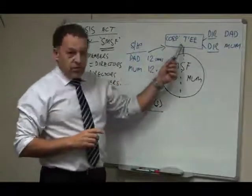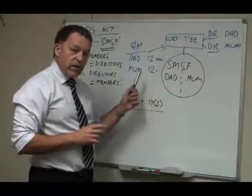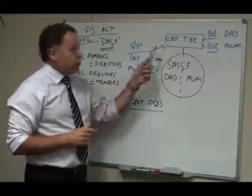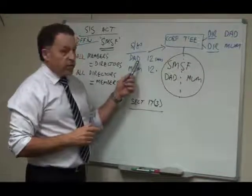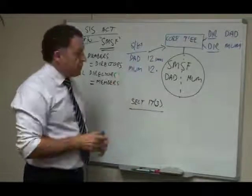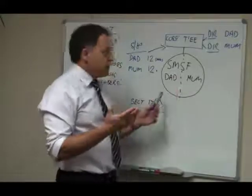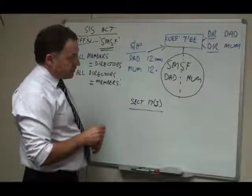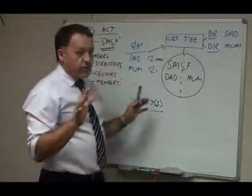Typically also in the corporate trustee which is a company we have shareholdings, and typically a corporate trustee would be set up with for example Dad owning 12 shares and Mum owning 12 shares. So they're 50-50 and inside the fund they may be roughly 50-50. That doesn't really matter. So that's all fine.